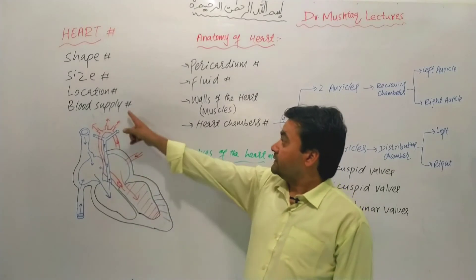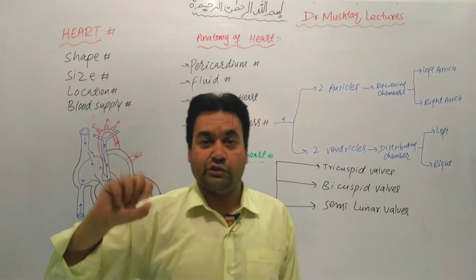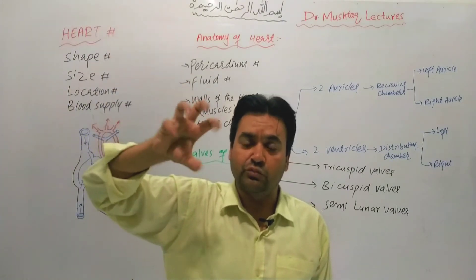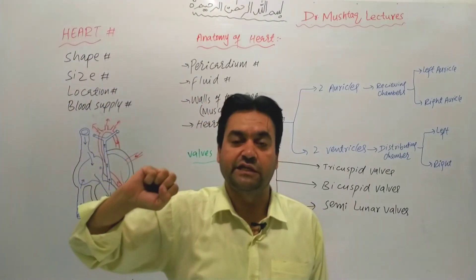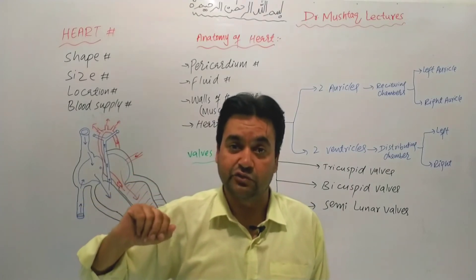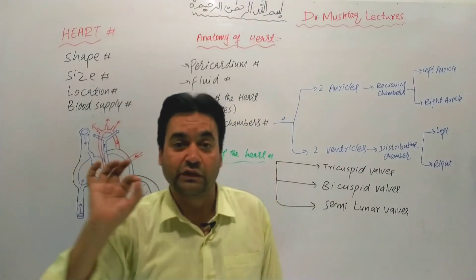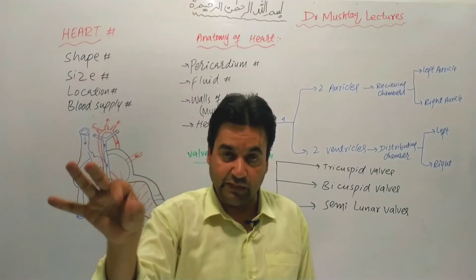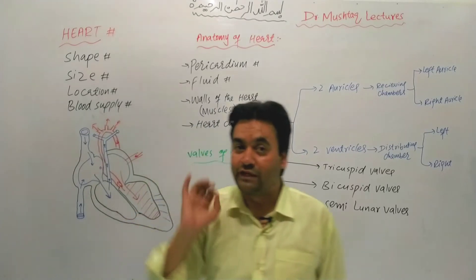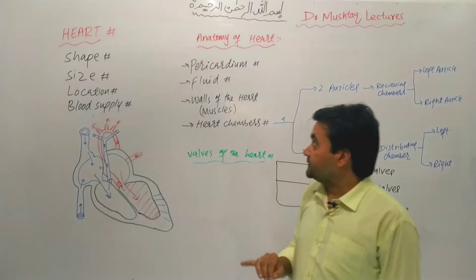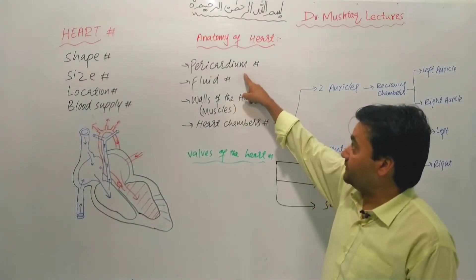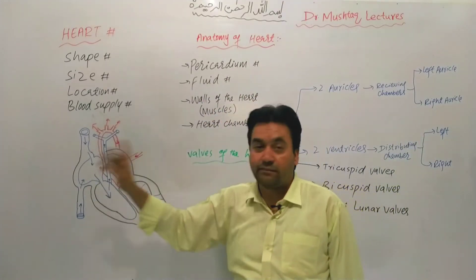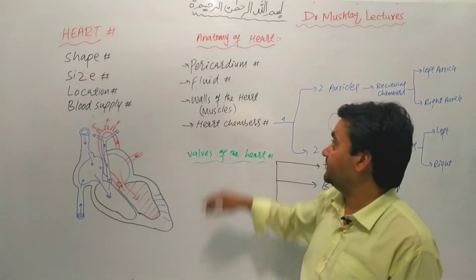In addition, blood supply is needed and the heart should be pumping. The oxygen and nutrients needed are supplied, and any toxins must be neutralized. The oxygen supply to the heart itself is provided by the coronary arteries.